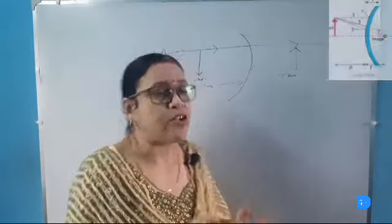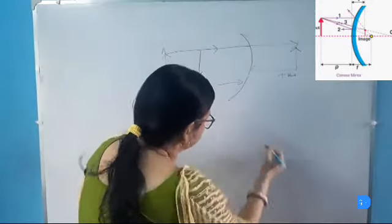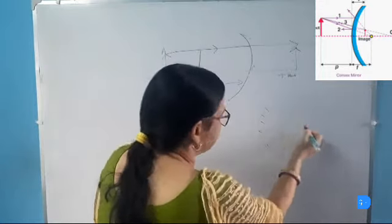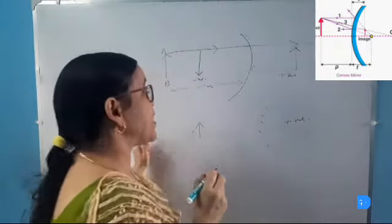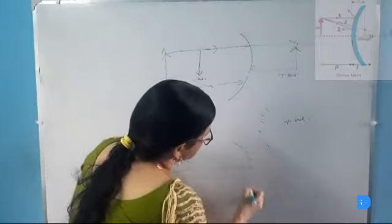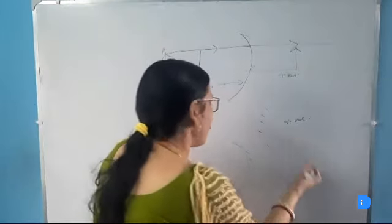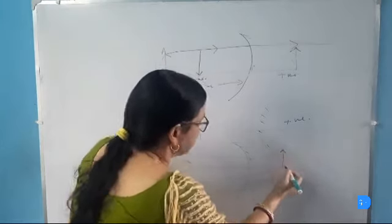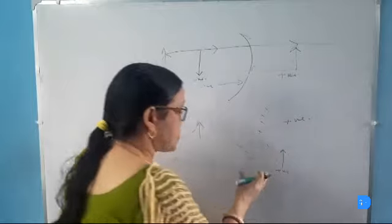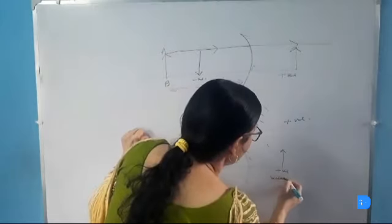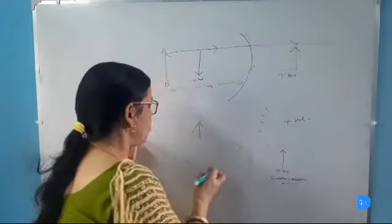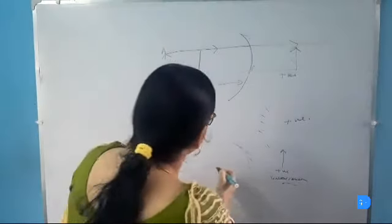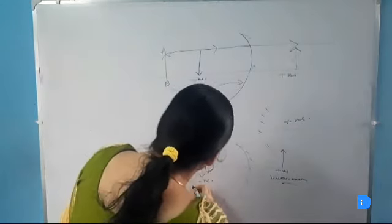In convex mirror, all the images are formed behind the mirror, that is on the right hand side, so all the image distances will be considered as positive. But in case of concave mirror, the images formed behind the mirror are always virtual and erect and so they are considered as positive. Whereas where images are formed on the left hand side against the direction of incident light, they will be considered as negative because they are real and inverted images.